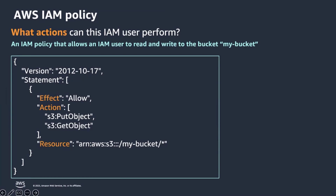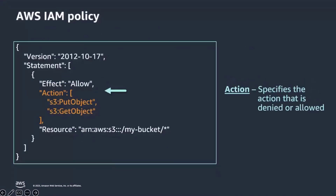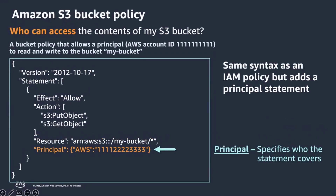Now that we disabled ACLs, we can grant access to S3 resources through IAM policies and S3 bucket policies. An IAM policy determines what actions an IAM user or IAM role can perform. The effect element specifies whether the policy results in an allow or deny. The action element specifies which actions are allowed or denied. And finally, the resource element specifies which AWS resources are affected by the policy.